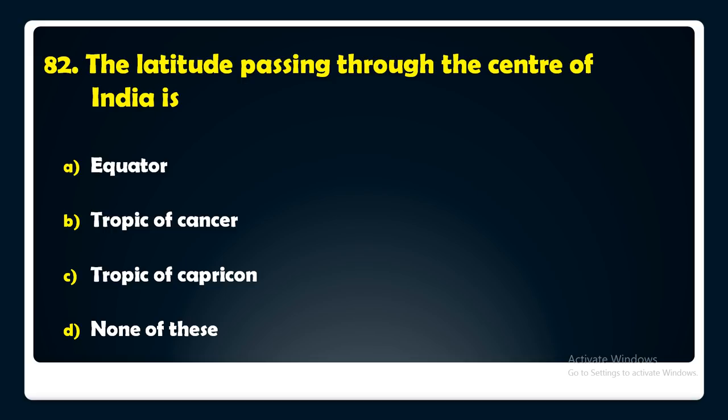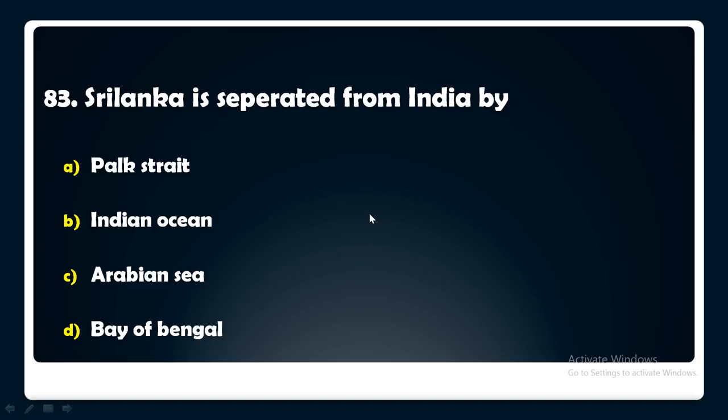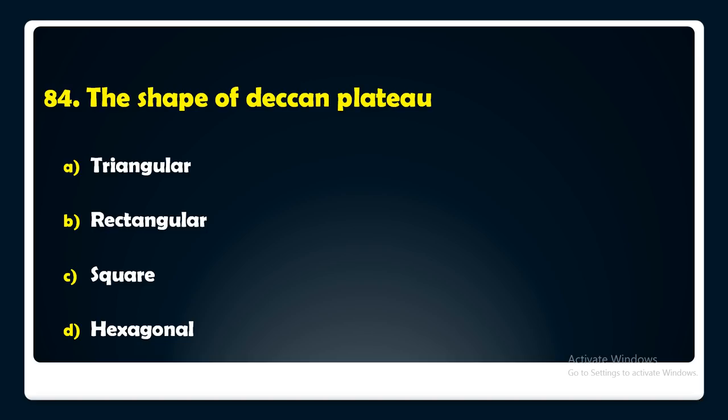Sri Lanka is separated from India by — Palk Strait, Indian Ocean, Arabian Sea, or Bay of Bengal? The answer is: Sri Lanka is separated from India by Palk Strait. The shape of the Deccan Plateau is — triangular, rectangular, square, or hexagonal? The answer is: the shape of the Deccan Plateau is triangular.